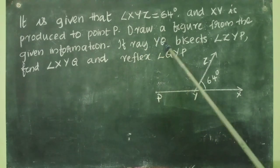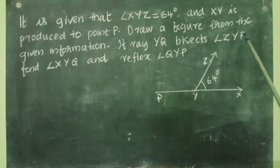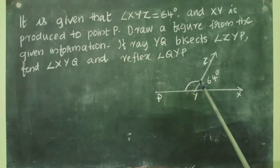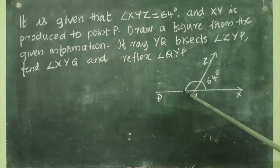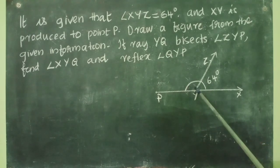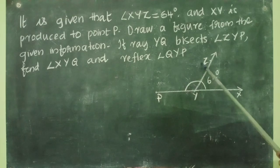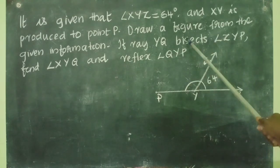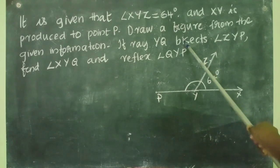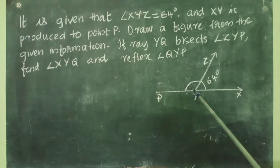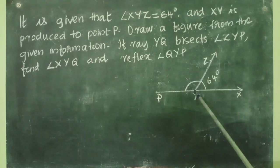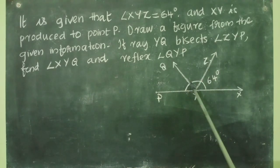If ray YQ bisects angle ZYP — which is angle ZYP? This one. So this is angle ZYP. Ray YQ bisects ZYP. We have to draw a ray from Y which is bisecting ZYP. What is the meaning of bisects? Bisect means dividing into two equal parts. So let us draw a ray from Y — that is YQ — which is bisecting this angle ZYP. I have drawn the ray YQ.